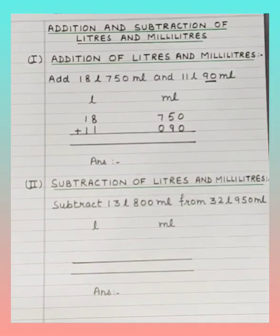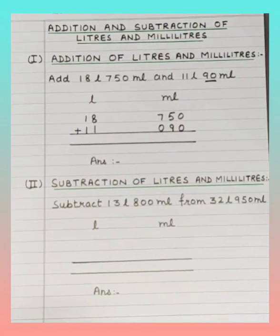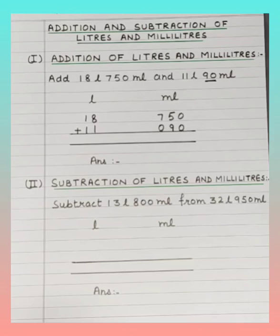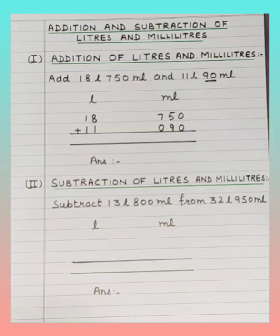Let's add 18 liters 750 milliliters and 11 liters 90 milliliters. Remember, to add or subtract liters and milliliters we have to arrange liters and milliliters in their respective columns. Let's arrange the numbers in columns.